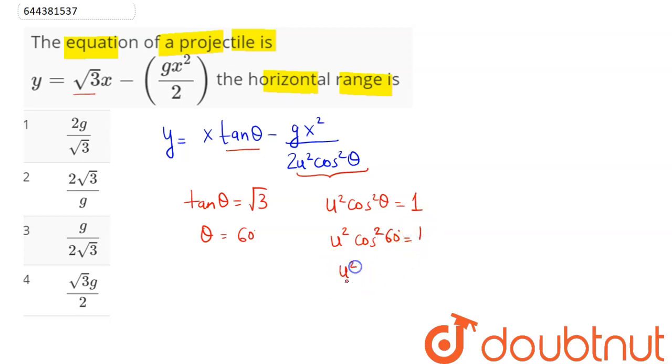And as we know, cos 60 is 1 by 2. So, 1 by 2 whole square is equal to 1 by 4. So, hence, we have u as 2 meter per second.